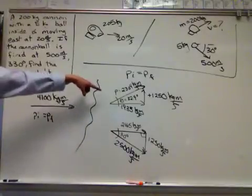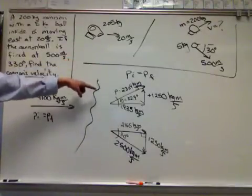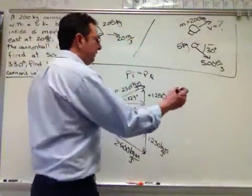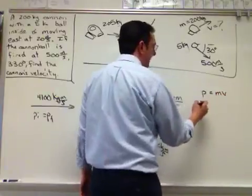So then, that's the momentum. But I don't really want the momentum. I want the velocity. I'm looking for the velocity up here for that thing. And so P equals MV for the cannon.